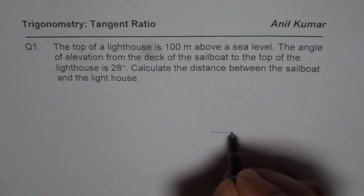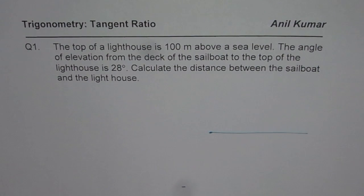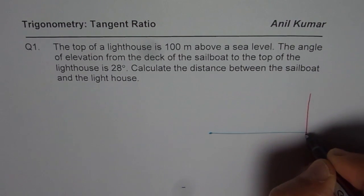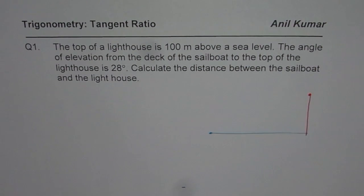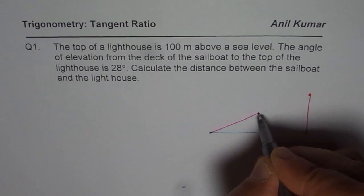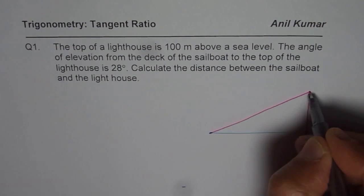So let us consider that the sailboat is somewhere here and we have a lighthouse right there. So let us say that is the lighthouse. Now what we are seeing here is, when we say that the angle of elevation is 28 degrees, the angle of elevation is always with the horizontal. Do you see that?